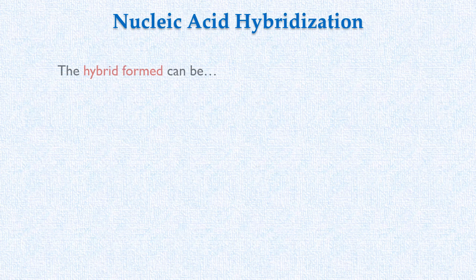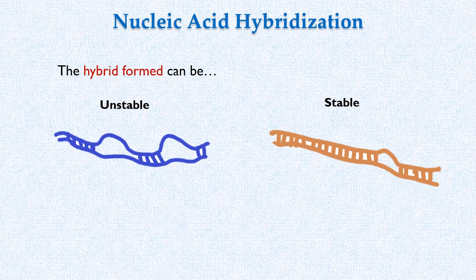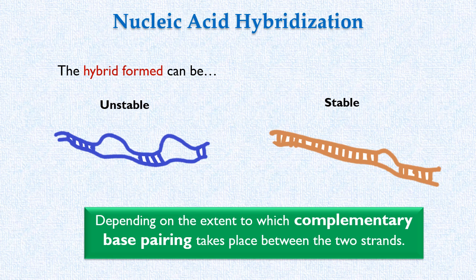The hybrid formed as a result of nucleic acid hybridization can be unstable or stable depending on the extent to which complementary base pairing takes place between the two strands. As a result, the double-stranded nucleic acid molecule formed can be partially or completely double-stranded. So if there is a high degree of complementary base pairing between the two strands, the hybrid formed is stable.